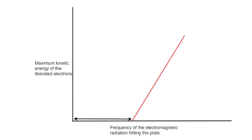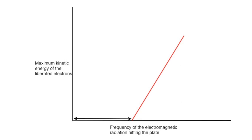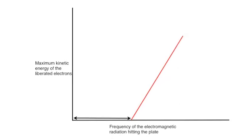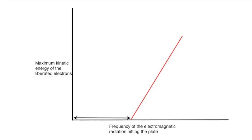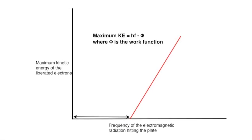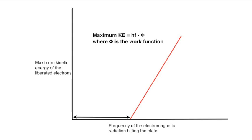In most cases, some of the energy of the photon will end up as heat, but in a few cases, all of the energy of the photon is used to lift it off the surface and then give it kinetic energy. There is a proportional relationship between the maximum kinetic energy of the electrons and the frequency of the electromagnetic radiation.